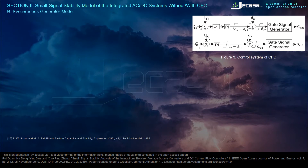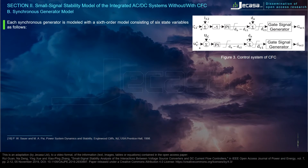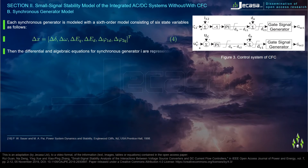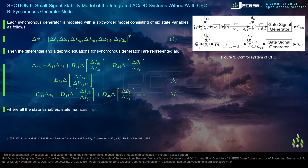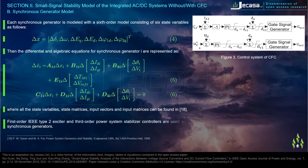The synchronous generator model: each synchronous generator is modeled with a sixth-order model consisting of six state variables. The differential and algebraic equations for synchronous generator i are represented accordingly, where all state variables, state matrices, input vectors, and input matrices can be found in reference 18. A first-order IEEE Type 2 exciter and third-order power system stabilizer controllers are used with the synchronous generators.